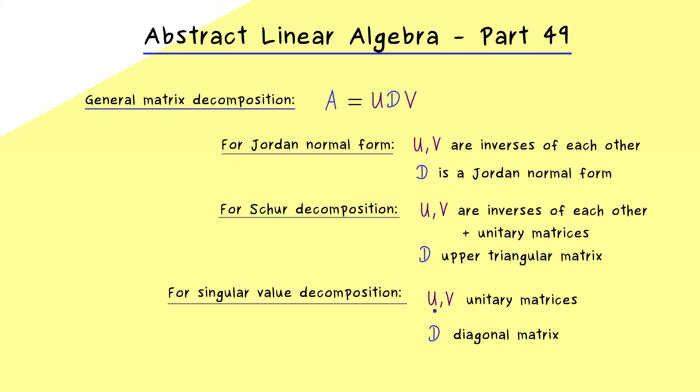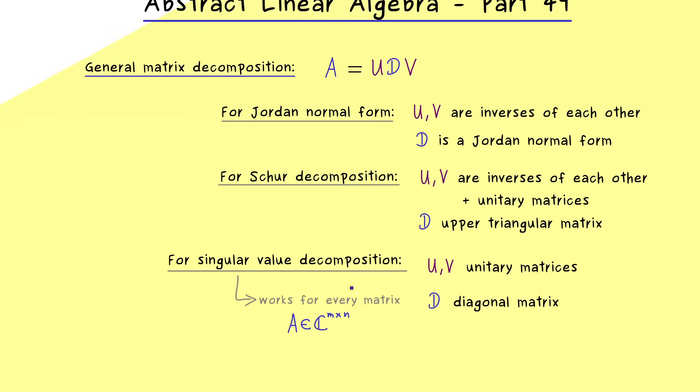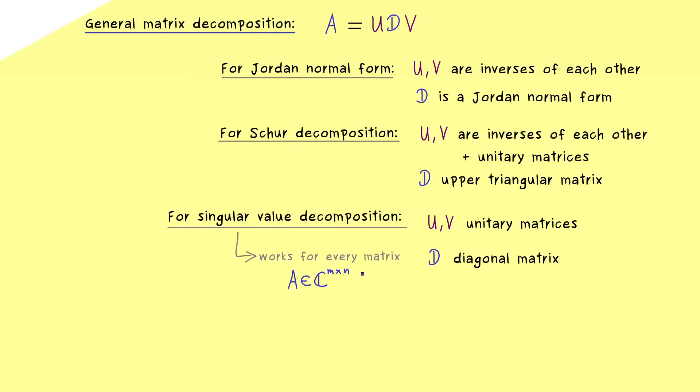And since we don't have any connection between U and V anymore, we can even transform rectangular matrices. So we can simply say this works for any matrix A with m rows and n columns. So you see, this makes this decomposition very versatile because we don't need any assumption for our matrix A. Moreover, I can already tell you about the common formulation one has for the singular value decomposition, because we would not write a D,